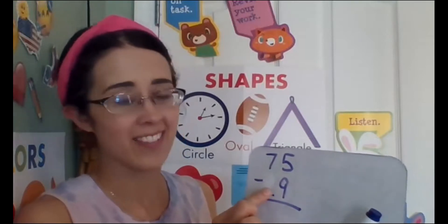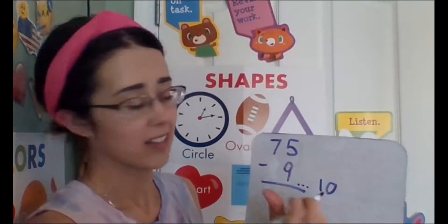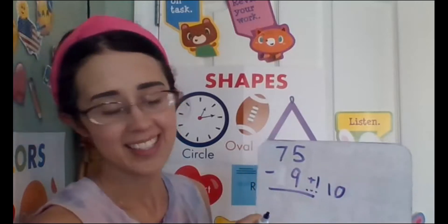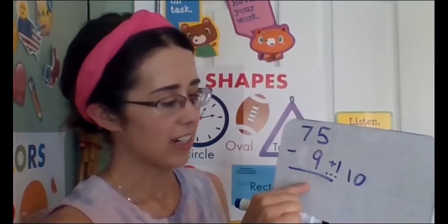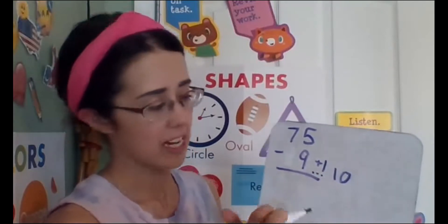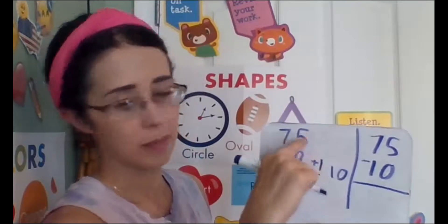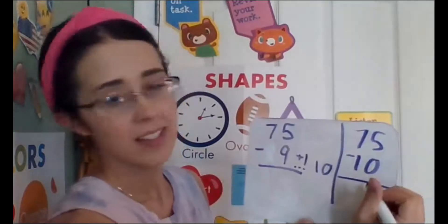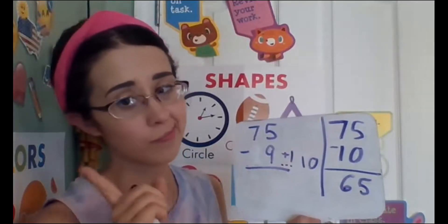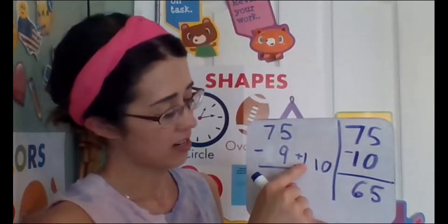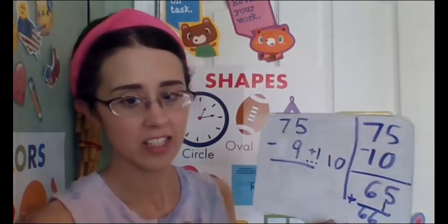Let's start off with 75 take away 9. Nine is very close to 10. In fact, all you have to do is add one and you can get to 10. So this strategy shows you an easier way by changing the nine into a 10. It's much easier to take away 10 from 75 than to take away nine. 75 minus 10 is 65. But is that our final answer? I have to plus one to 65 to get the correct answer of 66.